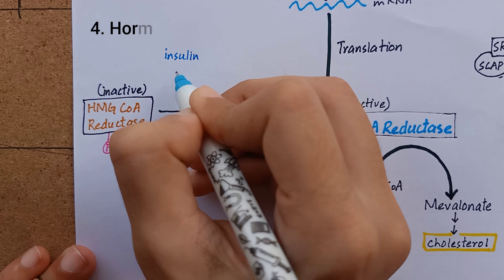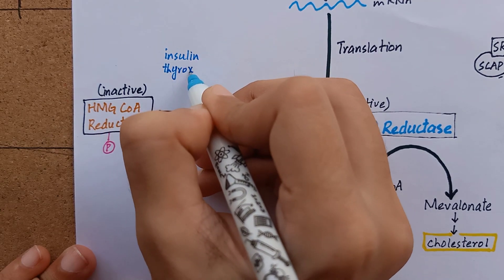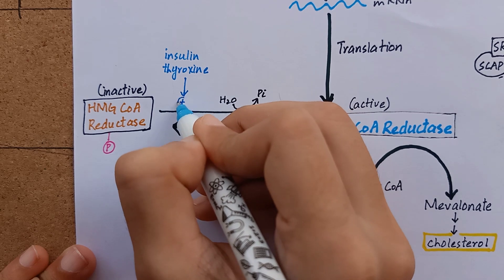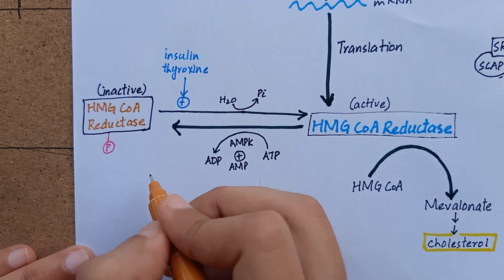There are some hormones which play an important role in phosphorylation and dephosphorylation of HMG-CoA reductase. Insulin and thyroxin increase cholesterol synthesis by enhancing the dephosphorylation of HMG-CoA reductase.